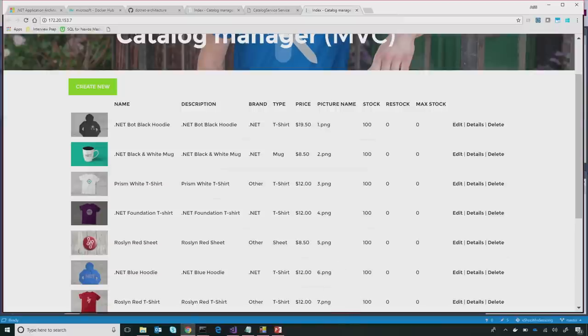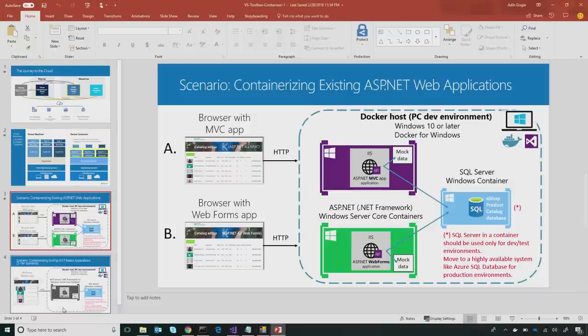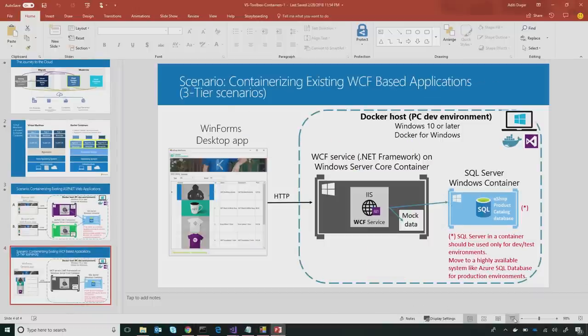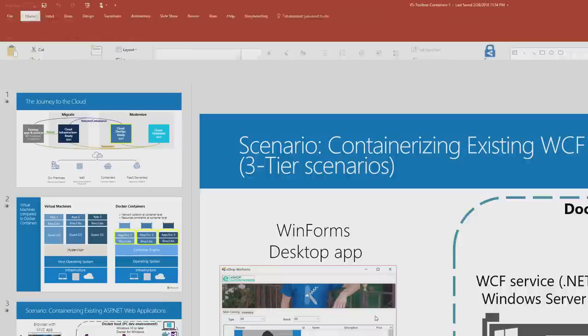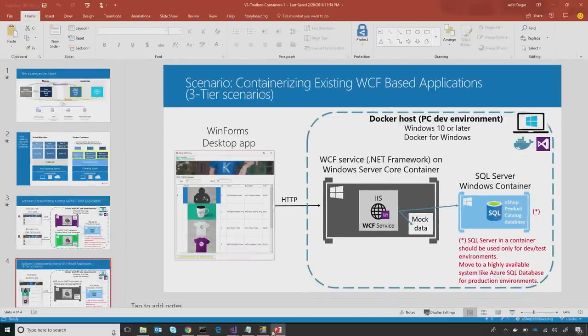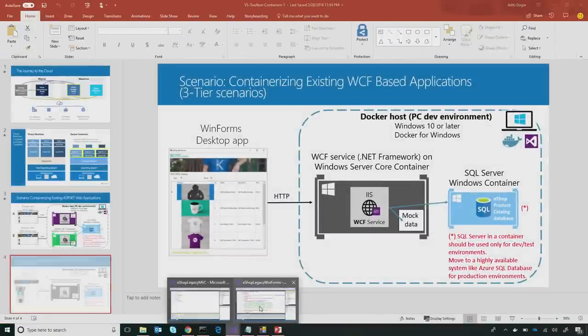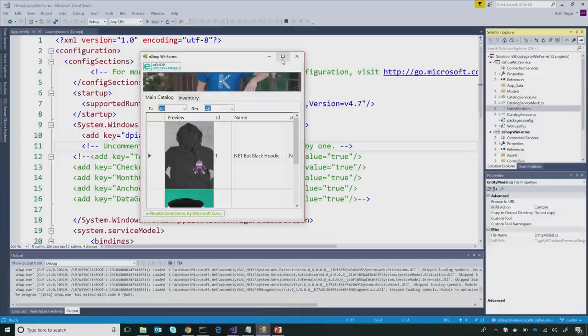Let's get into the second scenario, which is a little bit more complex but pretty similar. In this one you have a three-tier scenario: a WinForms front end, a WCF middle tier, and a SQL Server back end. This might be a more traditional n-tier app that you might have as a line of business application. This is based on the same eShop example. We go back to Visual Studio — I have this up and running.